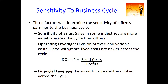The second measure is operating leverage, which is the proportion of fixed cost in the total cost structure of a firm. Higher fixed costs indicate the inability to scale up or scale down production during periods of expansion or contraction. Hence, industries with high operating leverage tend to be risky across the cycle. We can measure the degree of operating leverage as one plus the ratio of fixed cost to profit. Firms with higher operating leverage — that is, higher fixed costs — are riskier.